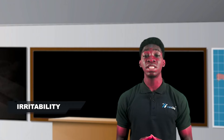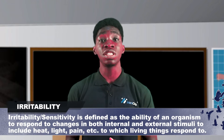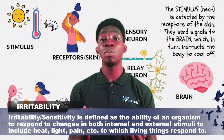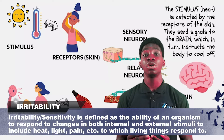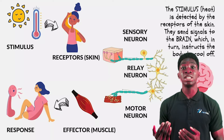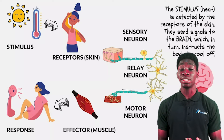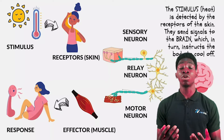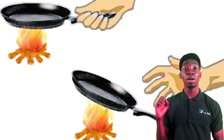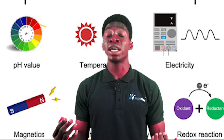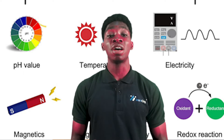Irritability or sensitivity is the ability of an organism to respond to changes in both internal and external stimuli. Those changes are called stimuli and include heat, light, pain, water, sound, and some chemical substances. For example, if you're cooking and try to open a hot pot, the jerk-back movement where you quickly remove your hand is a response to stimuli — your body is showing irritability.